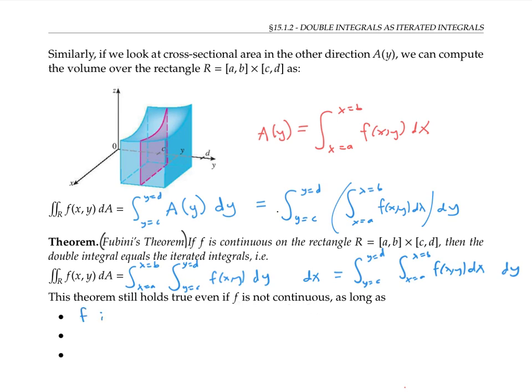As long as f is bounded on the rectangle, f is discontinuous only on a finite number of smooth curves, and the iterated integrals exist. Notice that Fubini's theorem actually gives us two different ways to compute a double integral. We can either integrate with respect to y first, or integrate with respect to x first, which way we choose will usually depend on which way makes the integrals easier to compute.